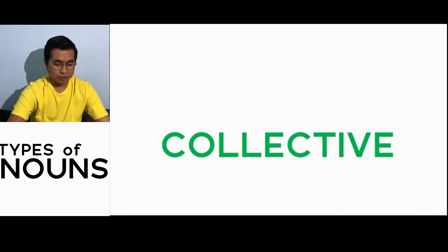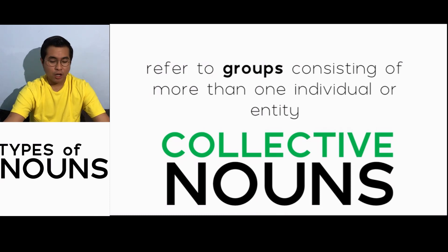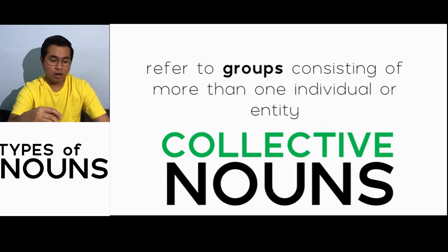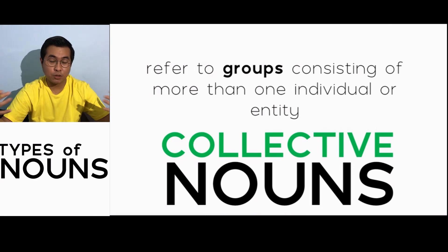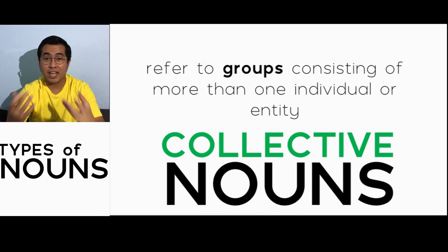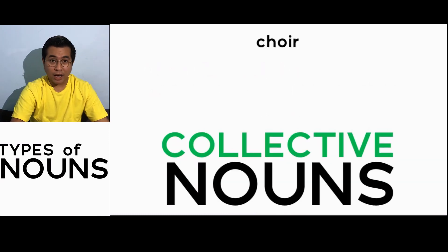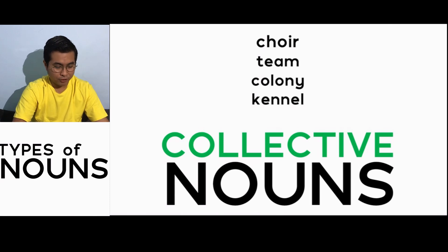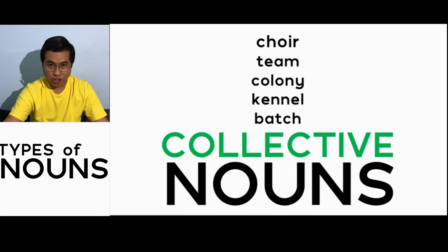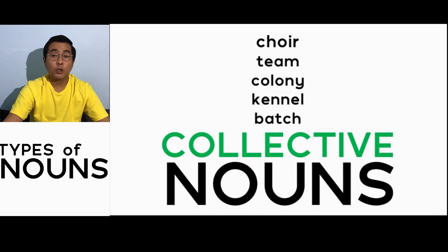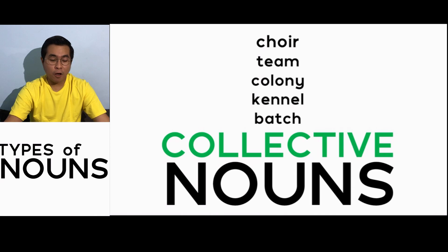Now we have collective nouns. Collective nouns refer to groups consisting of more than one individual or entity. Always remember that you are talking about groups or a collective — a collection of individuals, entities, people, animals, or things. Examples are choir, team, colony, kennel (for a group of dogs), and batch. When you use these words, remember they represent collections of individuals.